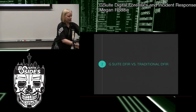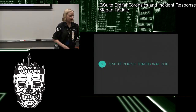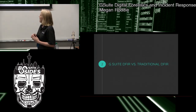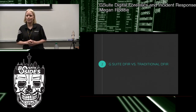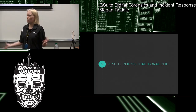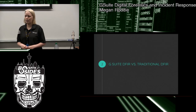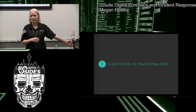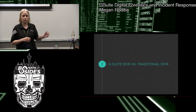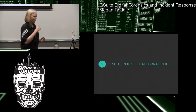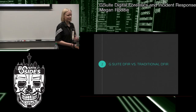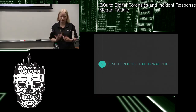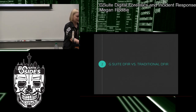First we're going to talk about DFIR in G Suite versus traditional DFIR. When I say traditional DFIR, I'm talking about your traditional Windows domain environment — a bunch of domain-connected computers, emails on an on-prem exchange server, and your users connected via Active Directory, everything on local machines. Obviously there are a bunch of different cases of DFIR, but that's kind of what I mean when I say traditional DFIR.